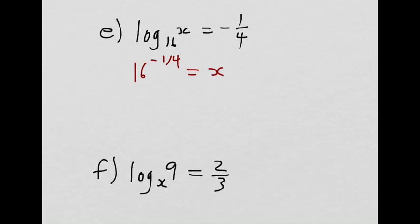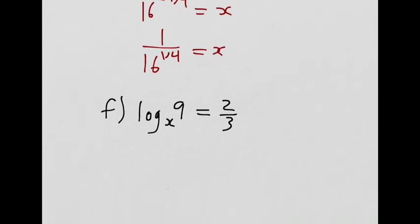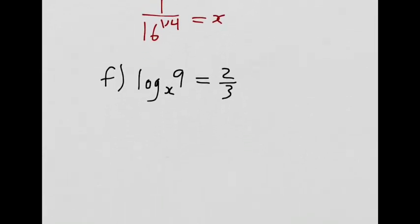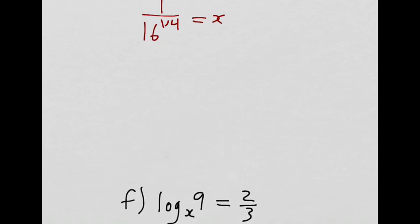The negative exponent brings it down to the denominator. So that's 1 over 16 to the 1 quarter equals x. And then I'm going to take 16 to the 1 quarter and convert it to radical form. I'm going to move that other problem for f down, running out of space.